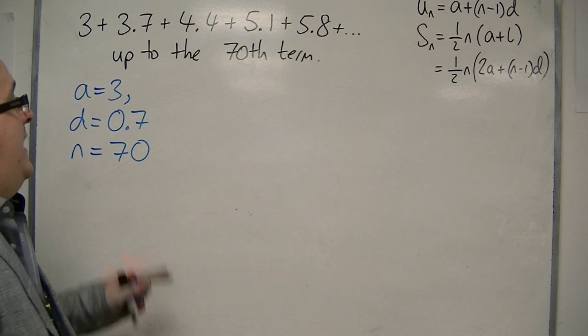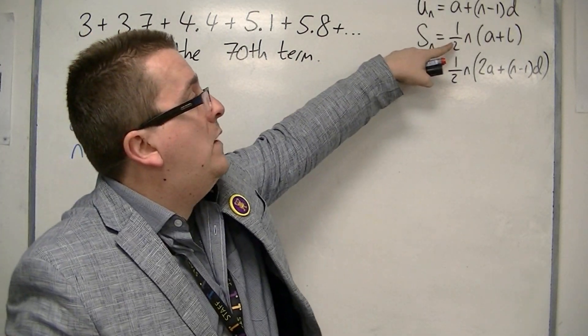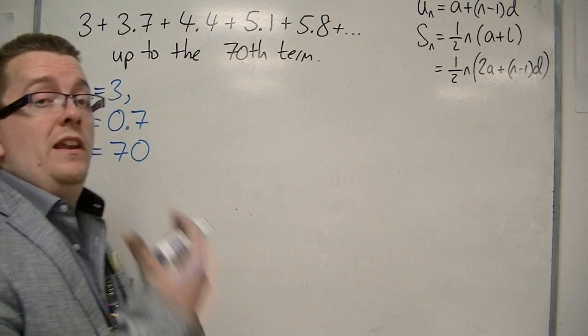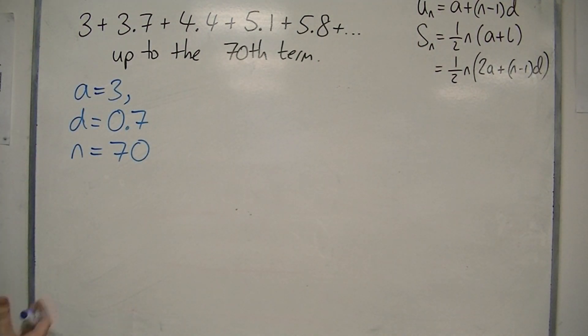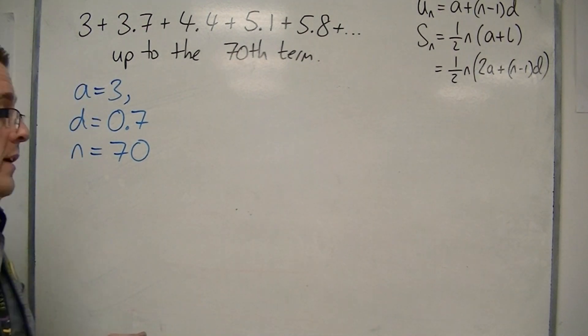So it lends itself to using the last formula rather than that one, because I don't know what the last term is. I could work out the last term if I wanted to using the nth term, but it just causes more work for me. That's why I have two formulas in the first place.